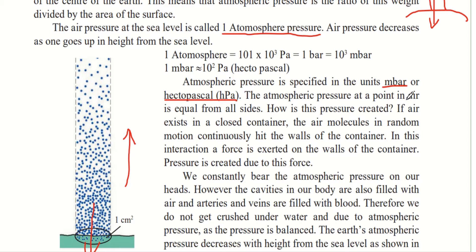The atmospheric pressure at a point in air is equal from all sides. For example, if you take any point in air above the surface of the earth, it will have equal pressure from all sides — top, bottom, or any direction. This pressure is created when air molecules in random motion continuously hit the walls of a container, exerting a force. Pressure is created due to this force.